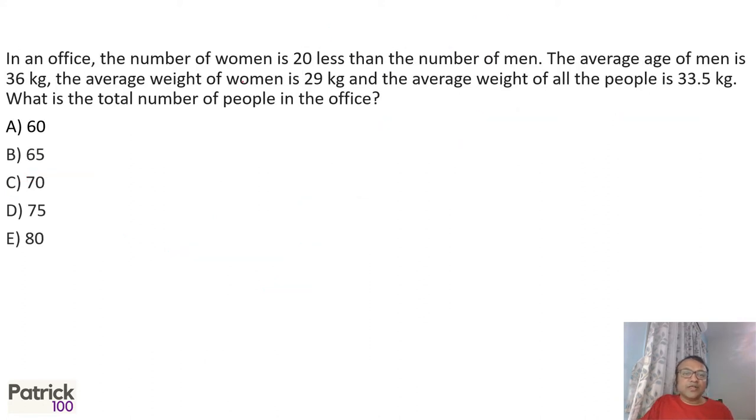Next, in an office the number of women is 20 less than the number of men. The average of men is 36 kg and women is 29 kg, and the average weight is 33.5. So one simple way of doing this: difference between the ratio is 7. So when you do allegations, total number of people should be a multiple of 7. Only option is 70.